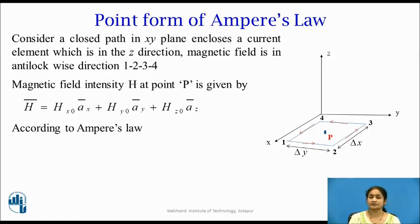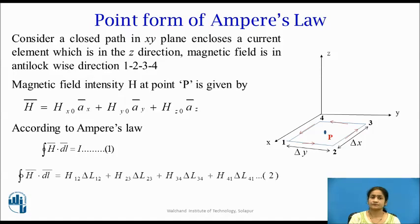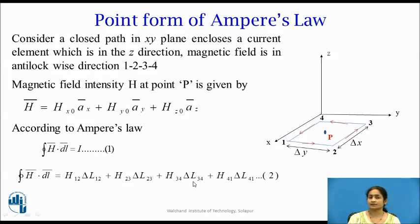The magnetic field intensity at point P is given by H = Hx0·ax + Hy0·ay + Hz0·az in Cartesian form. According to Ampere's Law, the closed integral of H·dL = I. We expand this equation along segments 1 to 2, 2 to 3, 3 to 4, and 4 to 1.